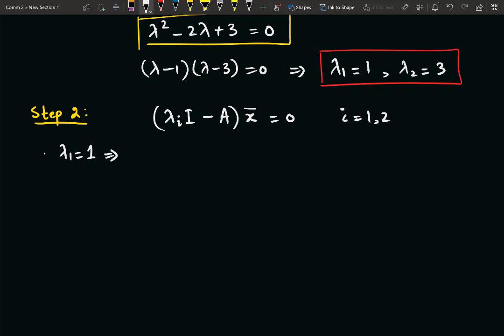So here if we put this value, it will be [1, 0; 0, 1], which is equal to identity matrix, minus system matrix which was [2, -1; -1, 2]. And we have to multiply it with the eigenvector, which is x. So let us suppose the entries of this eigenvector are x₁ and x₂, and it is equal to 0.